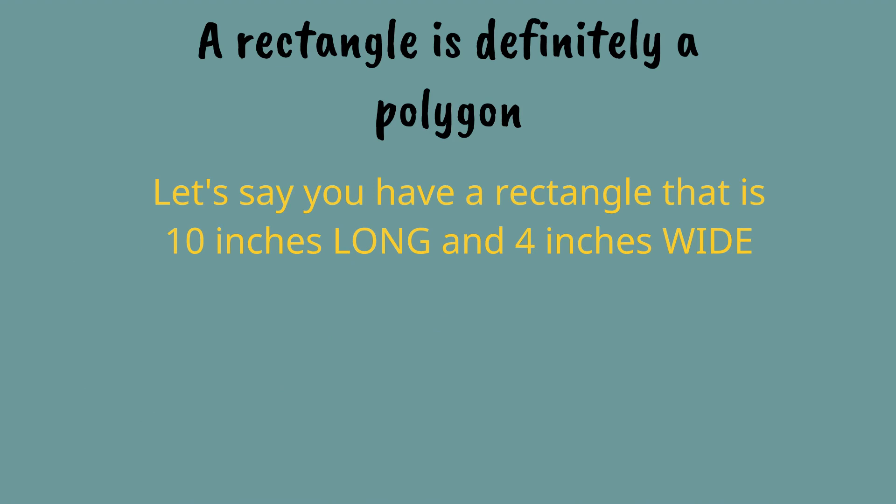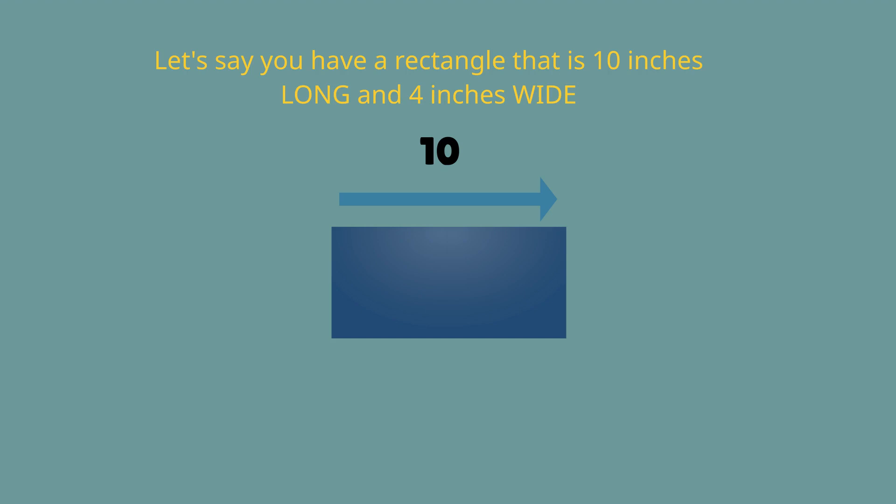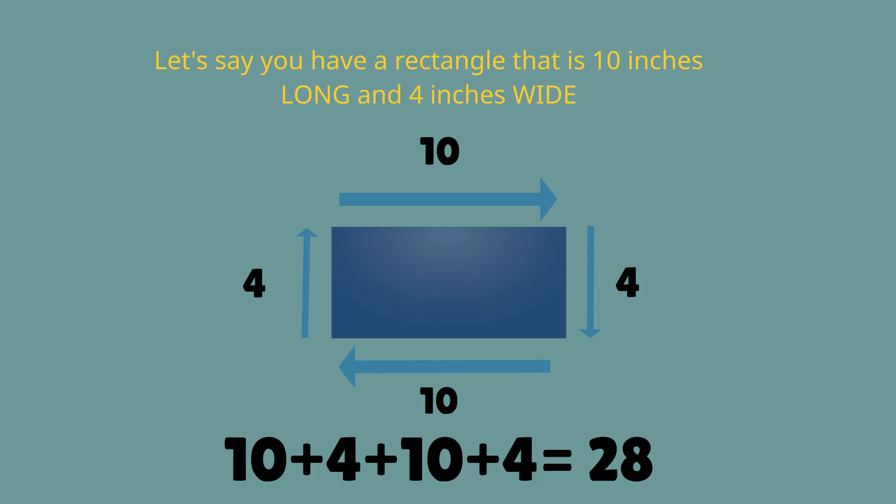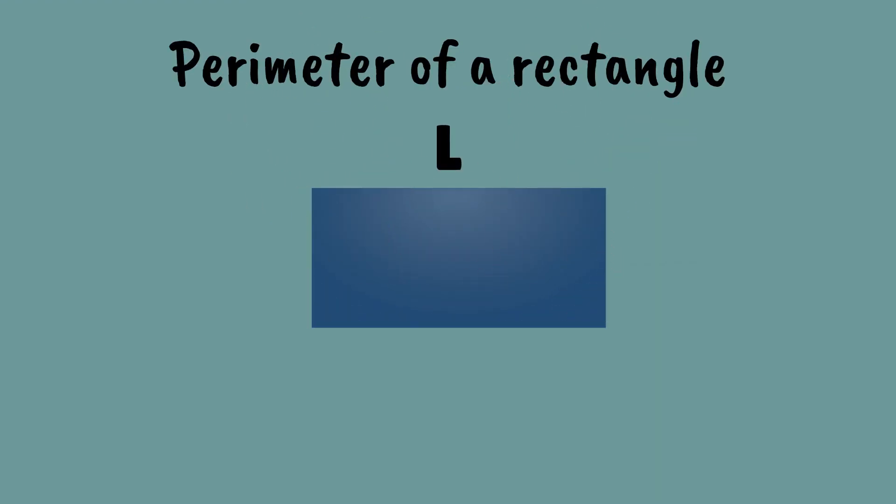A rectangle is definitely a polygon. Let's say we have a rectangle 10 inches long and 4 inches wide. We go down one side and that is 10 inches. We go down the other side which is 4 inches, so 10 plus 4 equals 14. And you go back up the long side which is another 10 inches, so that is 14 plus 10 which equals 24. And then up the side and add those 4 inches to 24, which gives you 28. So here is our perimeter: 10 plus 4 plus 10 plus 4 equals 28.